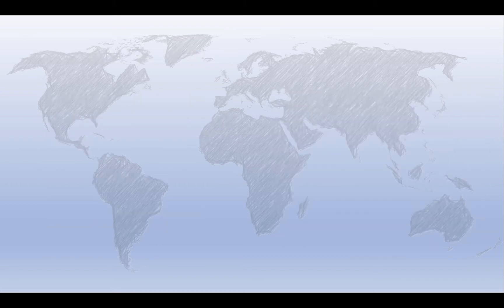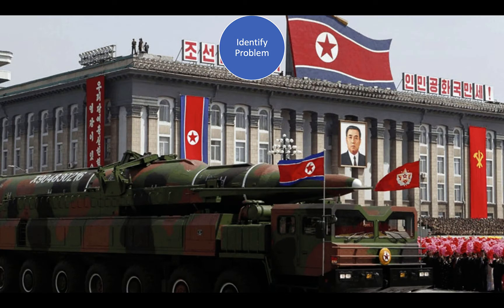Now, even with all of those assumptions, the rational actor model is probably the way we most often assume policy is made. The model itself specifies several steps in the decision-making process. First, a problem is identified. Let's say in this case we're concerned about the North Korean nuclear program. Ideally, we'd have full information about the actors involved, their motivations, their capabilities, and the nature of the international environment, or the context of the problem.